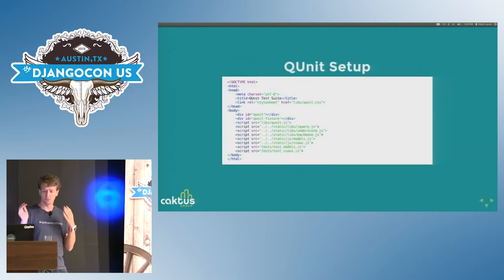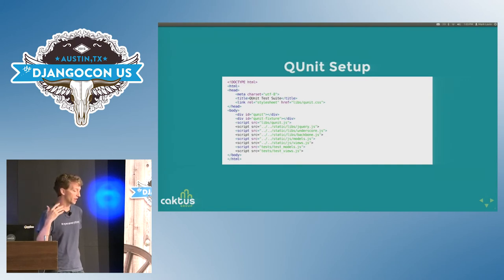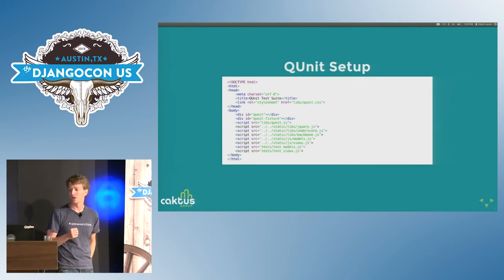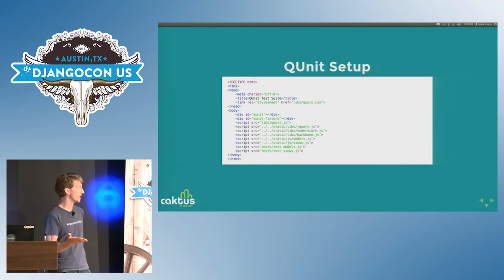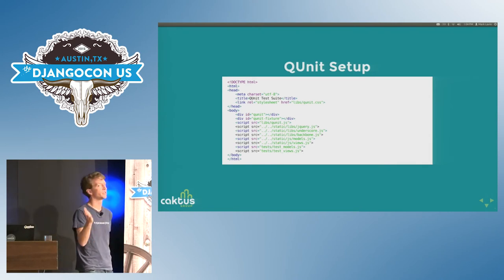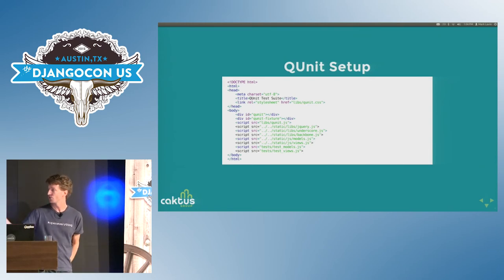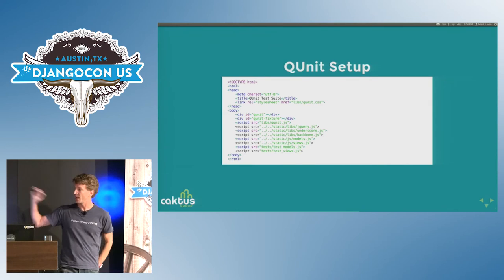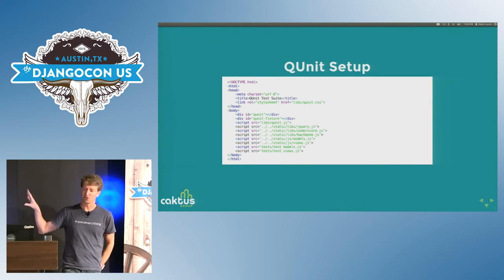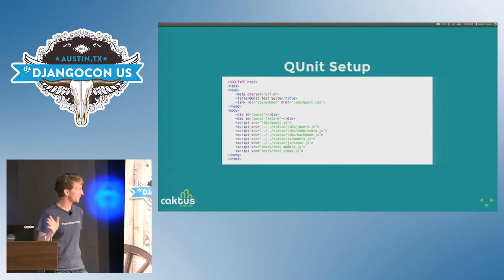Setting up QUnit is about creating a static HTML page which includes all the QUnit pieces — there's some CSS for QUnit and the QUnit JavaScript itself. For my project, there's the code I want to test: the Backbone models and views — not Django models and views. It depends on Backbone, which depends on Underscore and jQuery, so those are all included. At the very bottom, I have two new files: test models and test views. The closing script tags are missing due to a reveal.js issue, but they're in the repo.